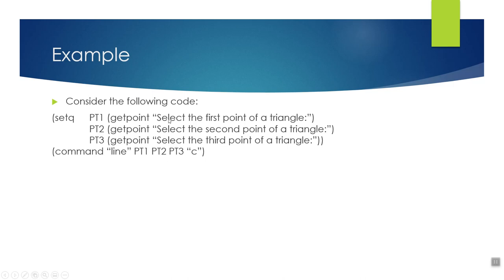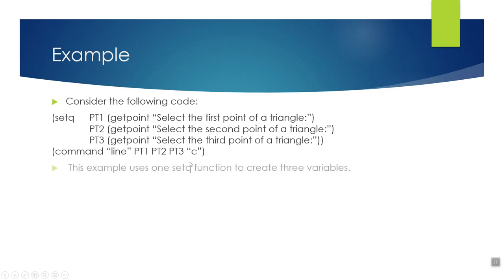This is just an excerpt — it's not an entire routine — but it's going to show some things. We're creating a few different variables: pt1, pt2, and pt3. There's a getPoint command with information to the user to select the points of the triangle, and then the line command using pt1, pt2, and pt3, followed by the close option.